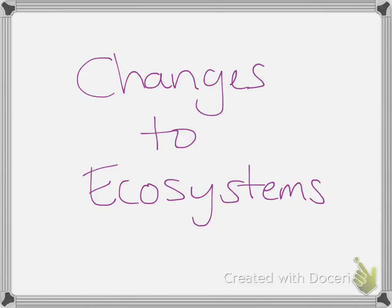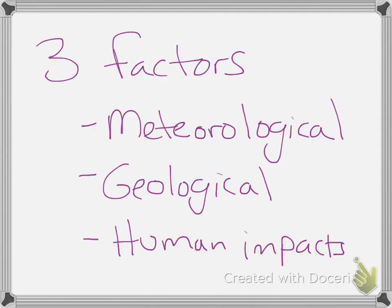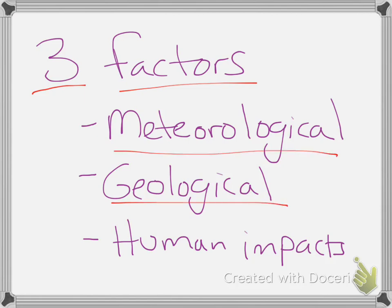This is a quick review on changes to ecosystems. There are three factors that can change an ecosystem: it can be something to do with meteorology, it can be geologic, and the one we're going to focus on is human impact.